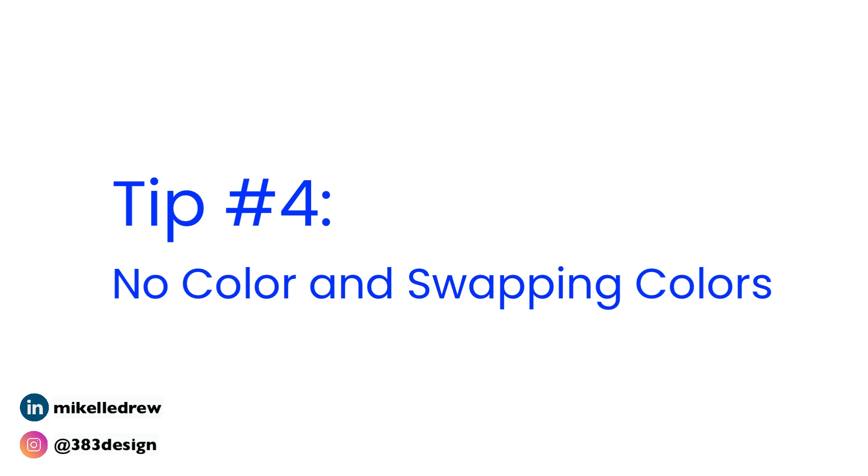Tip number four: no color and swapping colors. Most people know that the red strikethrough means no color, located at the bottom of the tools panel and in the lower left corner of the color panel. But a quick way to change your fill or stroke color to none is by pressing the backslash. Also, pressing the letter X will swap the position of the fill and stroke boxes — whichever is in the foreground is the one you'll be affecting when you choose a color. And if you've already added your color to the wrong box, pressing Shift+X will swap the colors between the fill and stroke boxes. I actually use that one pretty often.